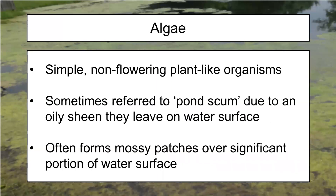Let's start with algae. This is a simple non-flowering organism that is very plant-like and is in the kingdom Plantae, so it's grouped together with plants, but it is not technically a plant — it's a different kind of organism. It is photosynthetic, but it can draw nutrients from water, and some of them like to live as colony organisms. Basically, if there is water, there is algae, no matter the water source.